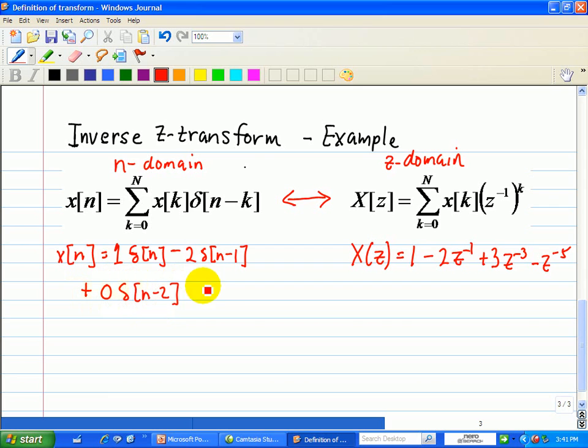For emphasis, that's 0δ[n-2]. Plus 3δ[n-3], then 0δ[n-4] since we don't have a z^-4 term. Finally, z^-5 gives us -δ[n-5]. So x[n] = δ[n] - 2δ[n-1] + 0δ[n-2] + 3δ[n-3] + 0δ[n-4] - δ[n-5].